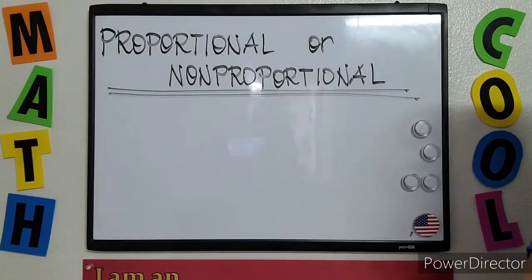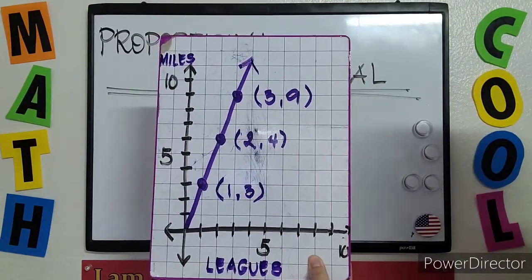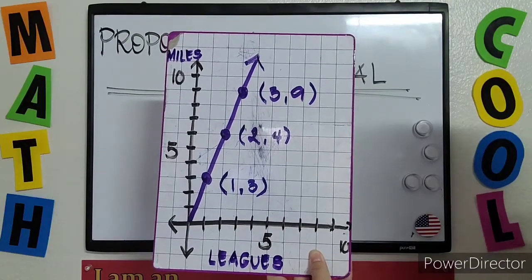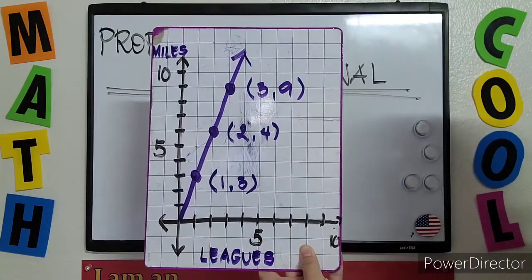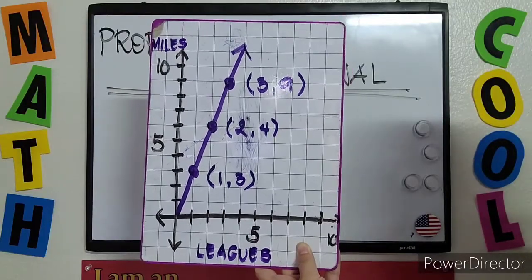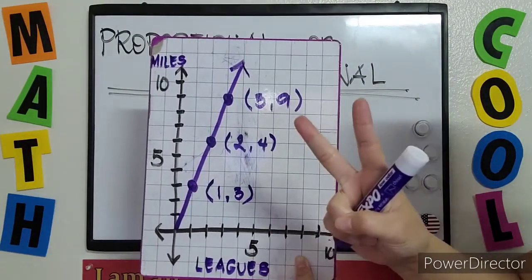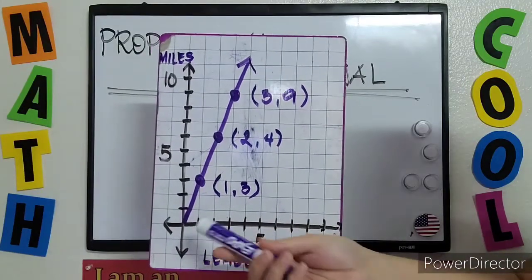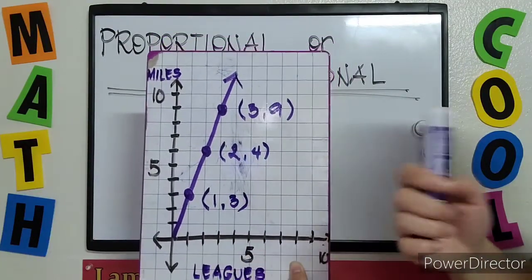So how are we going to know if a given graph represents a proportional relationship or not? Example number one. Look at the graph, which is the purple line. Where did it start? This graph represents a proportional relationship. How did I know? Because, first, it is a straight line. Second, it passes through the origin, which means it started at point (0, 0). So that means this graph is proportional.